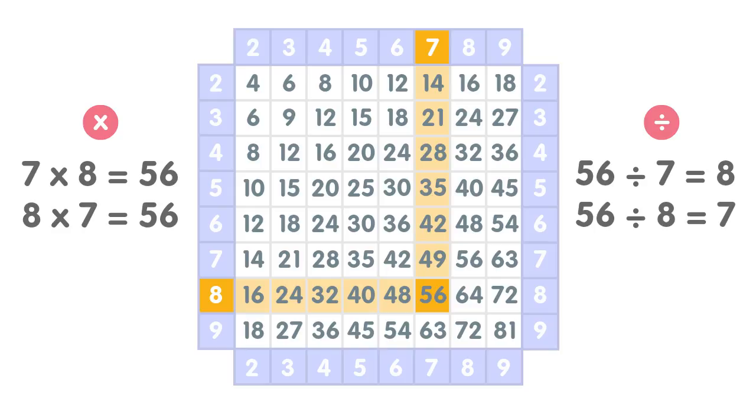Seven times eight equals 56. Eight times seven equals 56. 56 divided by seven equals eight. 56 divided by eight equals seven.